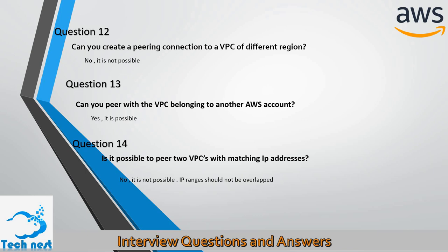Question thirteen: Can you peer with a VPC belonging to another AWS account? Yes, it is possible to peer with a VPC belonging to another AWS account. Question fourteen: Is it possible to peer two VPCs with matching IP addresses? No, it is not possible to peer two VPCs with matching IP addresses — the IP addresses should not overlap.